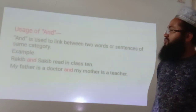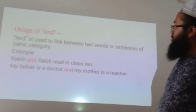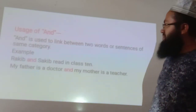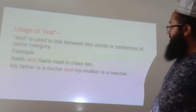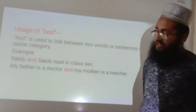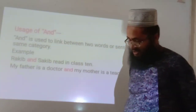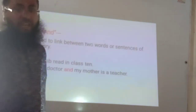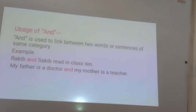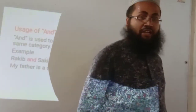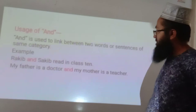Next, the usage of 'and'. 'And' is used to link between two words or sentences of the same category. Example: 'Rakit and Sakit read in class.' Rakit and Sakit are two nouns of the same category, linked by 'and'. Another example: 'My mother is a doctor and my mother is a teacher' — two sentences of the same category are connected by using 'and'.